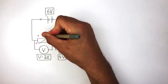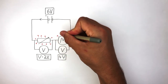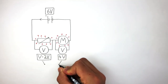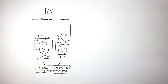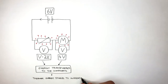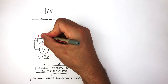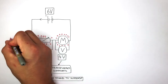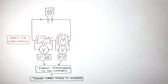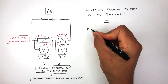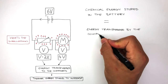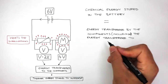We know thermal energy is transferred to the surroundings as the components become warm. As energy is transferred to the components, their thermal energy stores increase, and as thermal energy is released into the surroundings, this heats the surroundings. A key rule is that the chemical energy stored in a battery is equal to the energy transferred by the components, including the energy transferred to the surroundings.